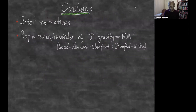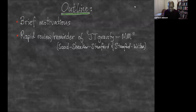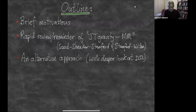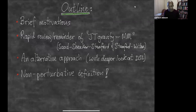I'll do some very brief motivations, with apologies for going quickly over some of the recent JT work, but I think especially for this audience that's probably okay. I'll do a rapid review of the JT gravity equals matrix model language in the way that Saad, Shenker, and Stanford do it, and also Stanford and Witten. Then I'll rapidly move on to talk about an alternative approach which perturbatively is equivalent but gives much more direct access to non-perturbative information.